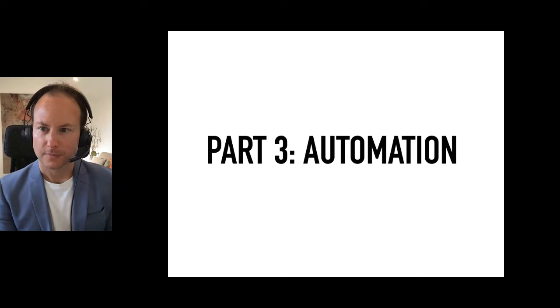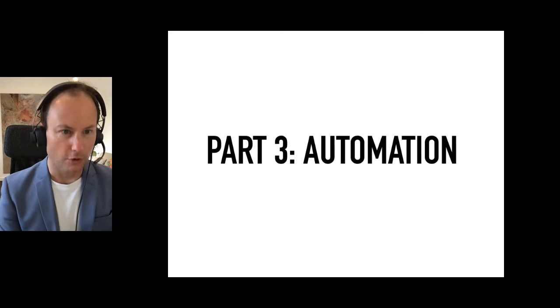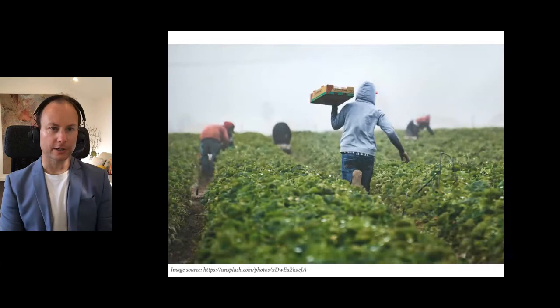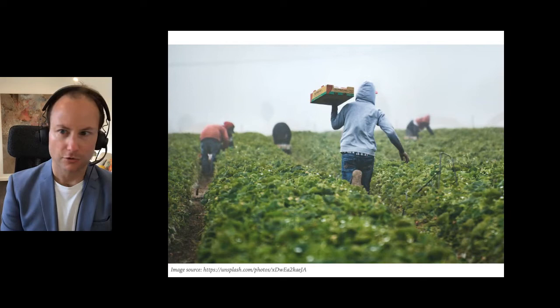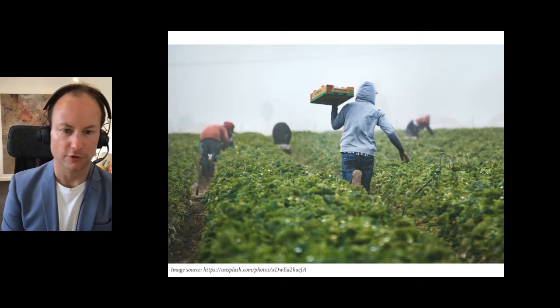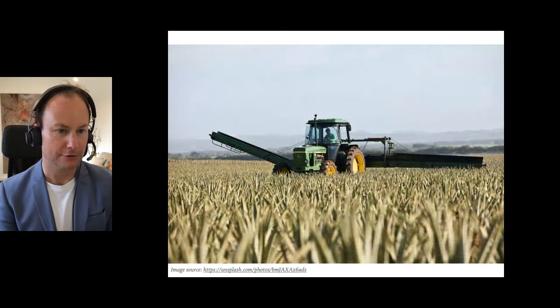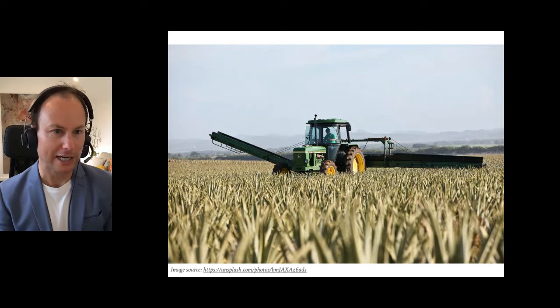This leads on to automation as a topic. Programming, and computers more broadly, allow the latest step in automation. But automation has been ongoing, particularly in the industrial revolution, with great advances in agriculture. For most of human history, most of our activities were ensuring we had enough to eat. In the last 150 years in particular, there's been a lot of automation with machines like tractors and combine harvesters, which allow us to feed far more people with the same amount of human effort and land use.